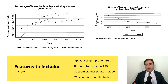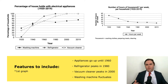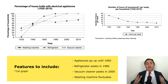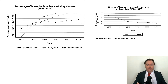Washing machine fluctuates from 1960 to 2019, where it peaks a little above 70%. So, what other information do we need to include? Like I mentioned, we must include the high points of the data — those are clear for refrigerator and vacuum cleaner. But what about washing machine? Since it changes the least, some of its data can be excluded. Now, we can move on to the second graph.